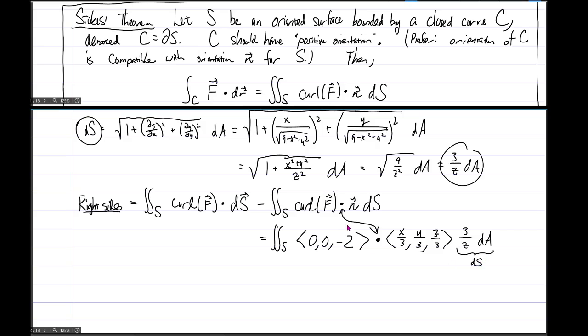But in the end, this will actually turn into double, let's see, because there's an A here, we should switch to a parameter domain, capital D. So this ends up being the double integral over D of negative, so 0 times that, gone, then 0 times y over 3, gone. So we end up with negative 2 times z over 3, but then that's times 3 over z, so the 3 over z and the z over 3 cancel to a 1. And so we're really just left with the integral of negative 2 dA.